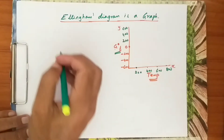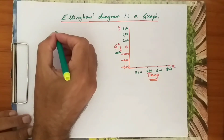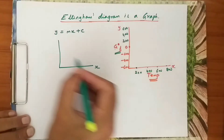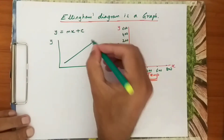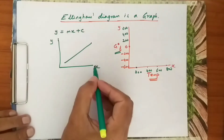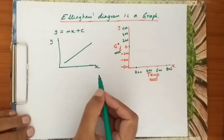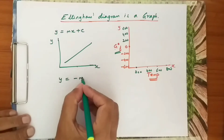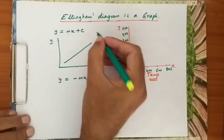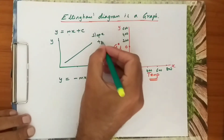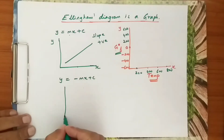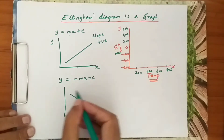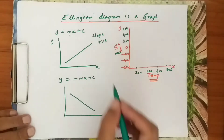Before going to the Ellingham diagram, let me give some basics. Taking the graph of y = mx + c, the x-axis and y-axis show that as x increases, y increases — a positive slope. For y = −mx + c, the slope is negative, so as x increases, y decreases.